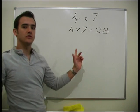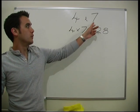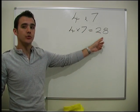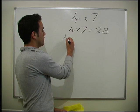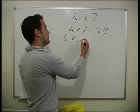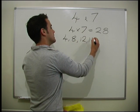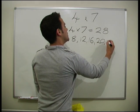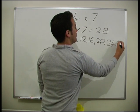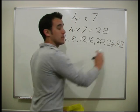We then list all the multiples of 4 and all the multiples of 7 up to 28. So let's do it for 4. 4, 8, 12, 16, 20, 24, and finally 28. Stop there.